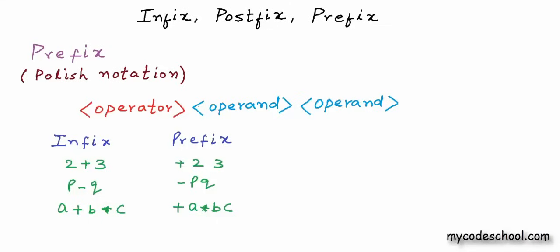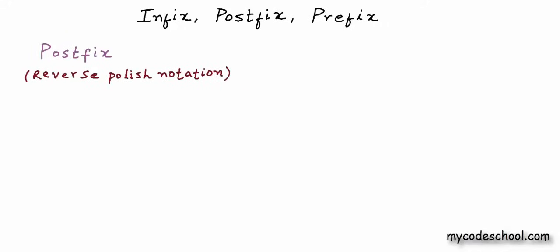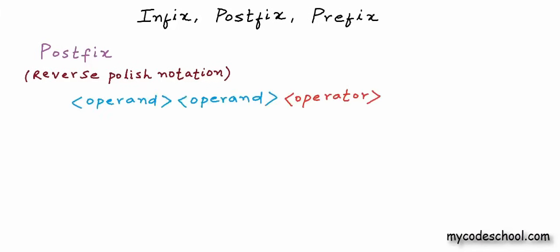Postfix notation is also known as reverse Polish notation. This syntax was proposed in the 1950s by computer scientists. In postfix notation, the operator is placed after the operands. Programmatically, a postfix expression is the easiest to parse and least costly in terms of time and memory to evaluate — that's why it was invented. Prefix expressions can also be evaluated in similar time and memory, but the algorithm to parse and evaluate postfix is really straightforward and intuitive, and that's why it's preferred for computation using machines.